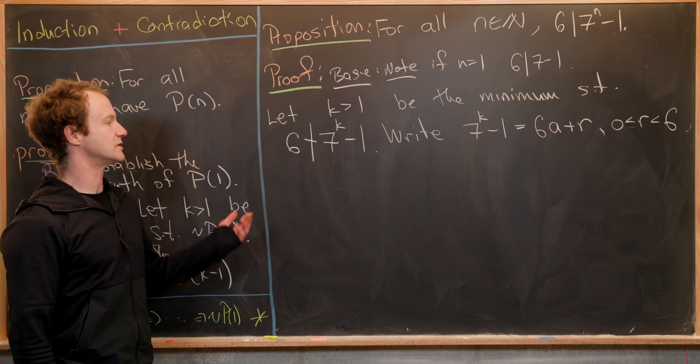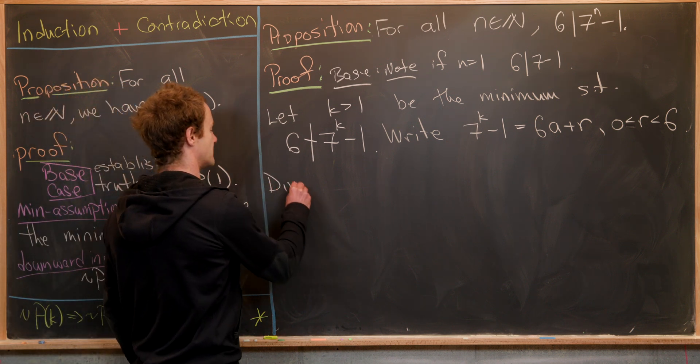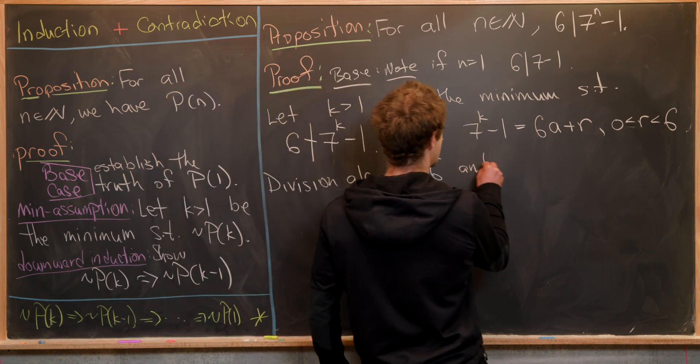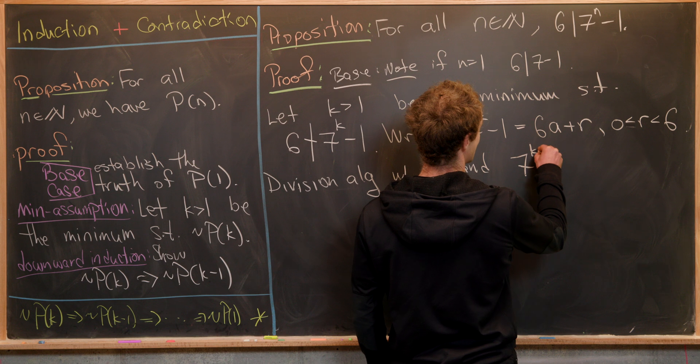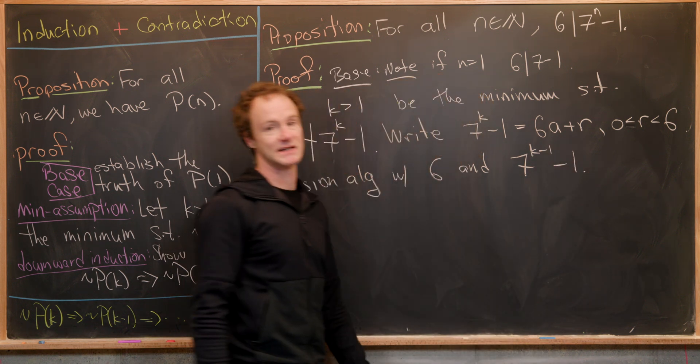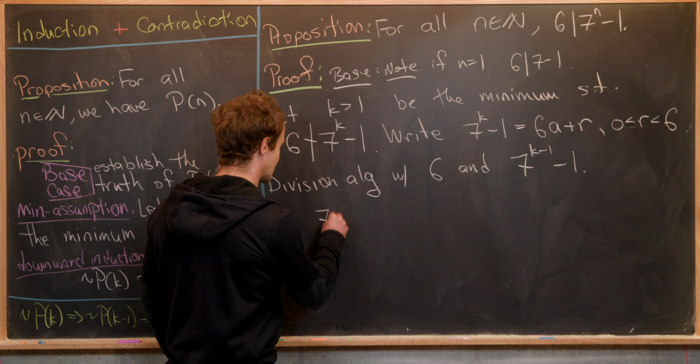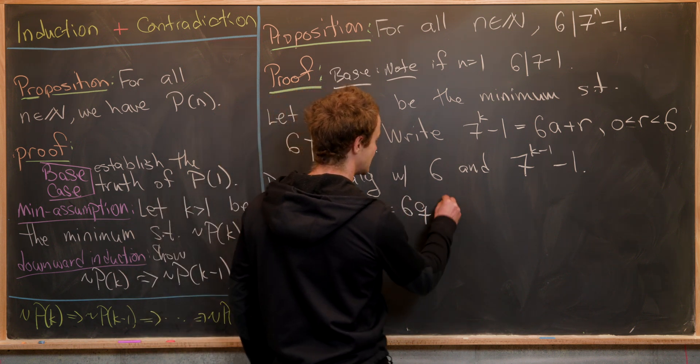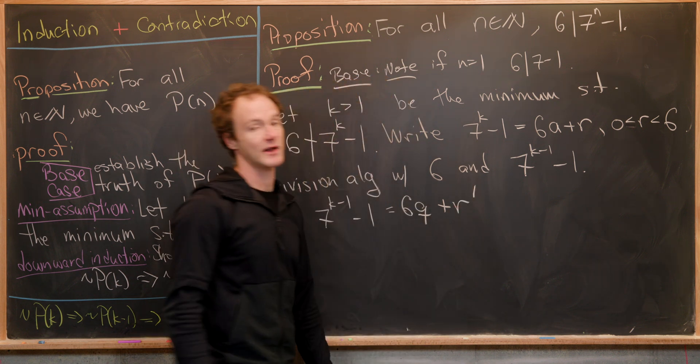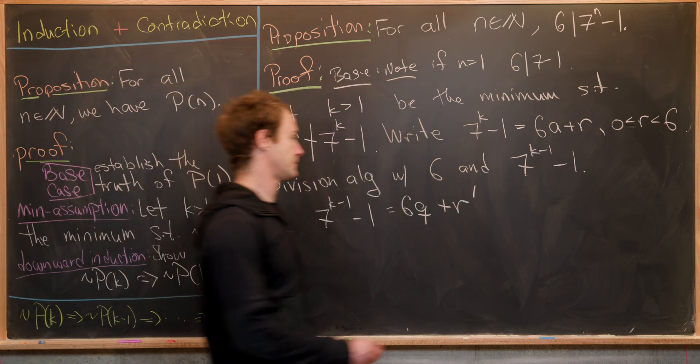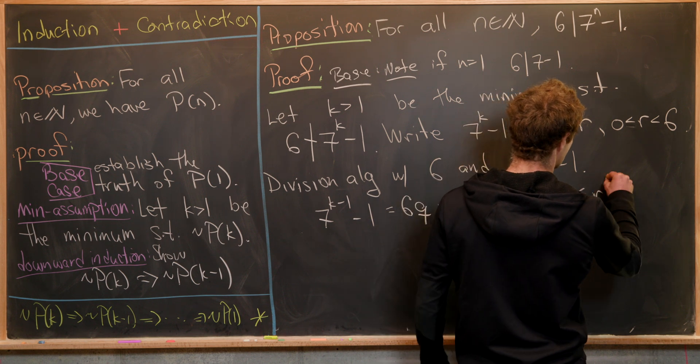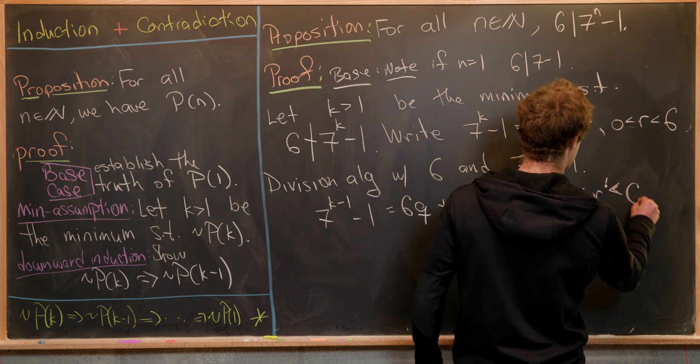Next, we'll use the division algorithm again with six and the previous case, which is seven to the k minus one minus one. That allows us to write seven to the k minus one minus one as six times q plus r prime, where zero is less than or equal to r prime, which is less than six.